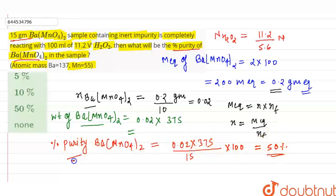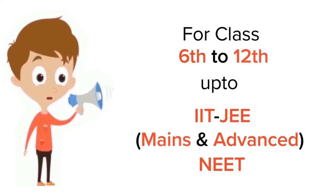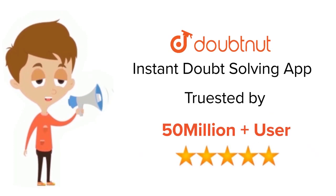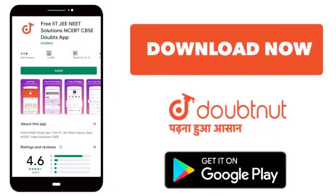Purity of Ba(MnO4)2. So here second, third option is correct and rest style options are incorrect. Thank you. For class 6 to 12, IIT, JEE, and NEET level, trusted by more than 5 crore students, download Doubtnut app today.